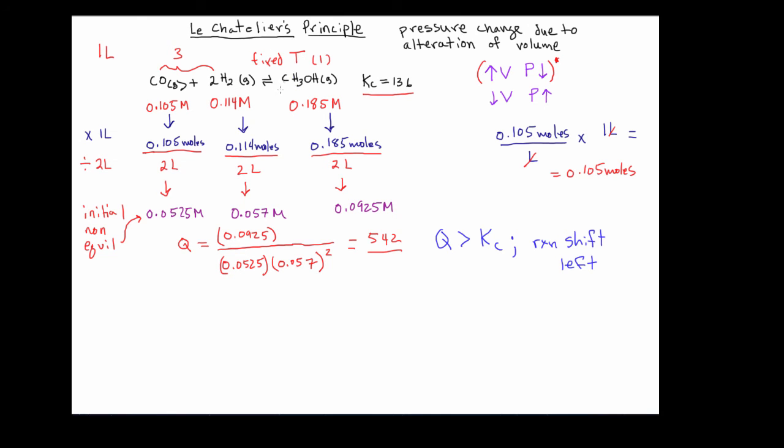So in the very beginning, we rationalized that we're going to be shifting to the left and lo and behold, when you calculate the Q for this, we see that Q is greater than K. And that tells us that the reaction indeed has to shift to the left from an analytical point of view. And so we see that the two methods for figuring this out were consistent.